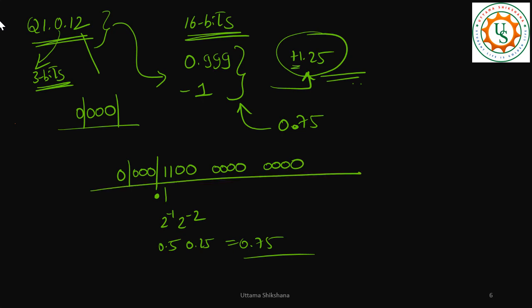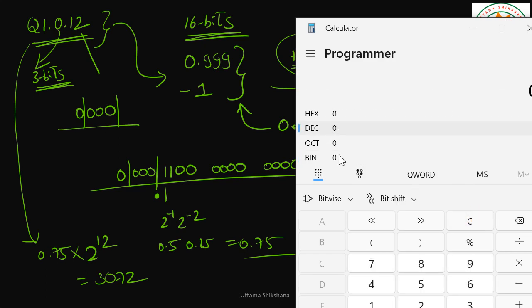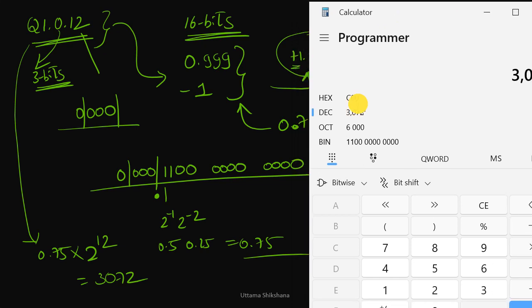To represent 0.75 in Q12 format: 0.75 multiplied by 2 to the power of 12 equals 3072. Let's check in the calculator — go to decimal, type 3072. You can see it is in 12 bits, and the first four bits are zero — not shown. This matches exactly what I represented in the bit pattern.